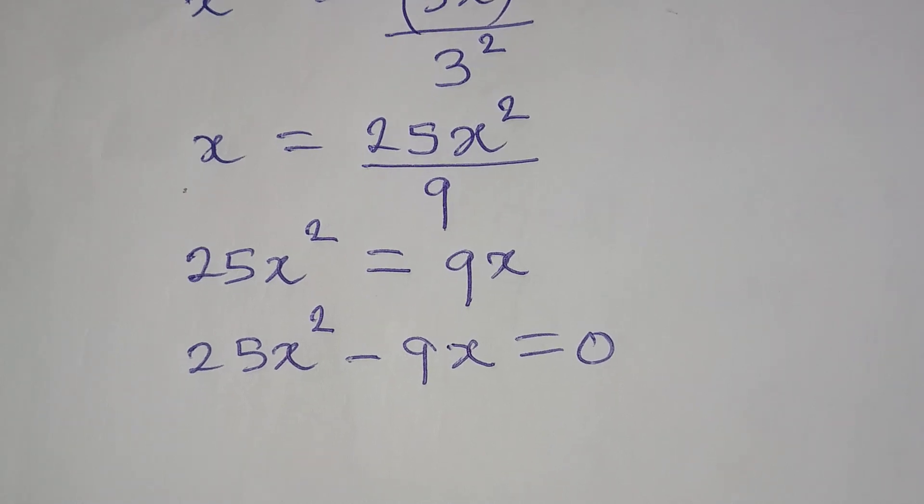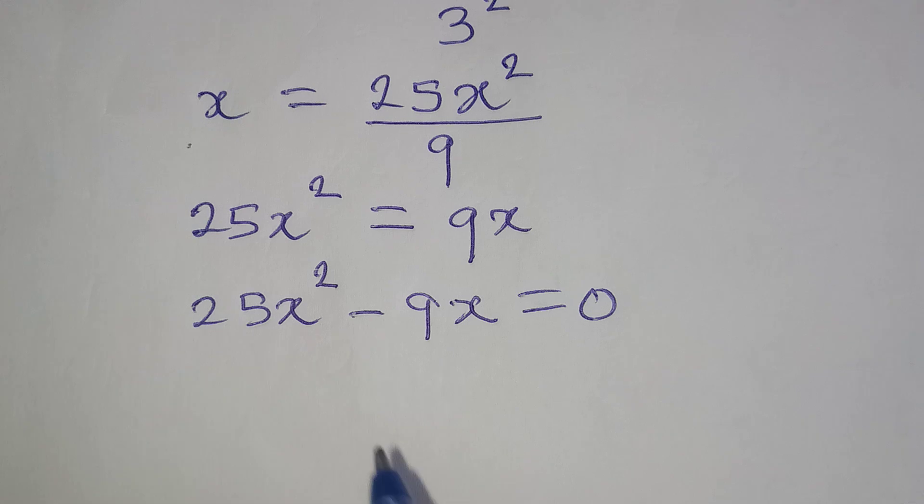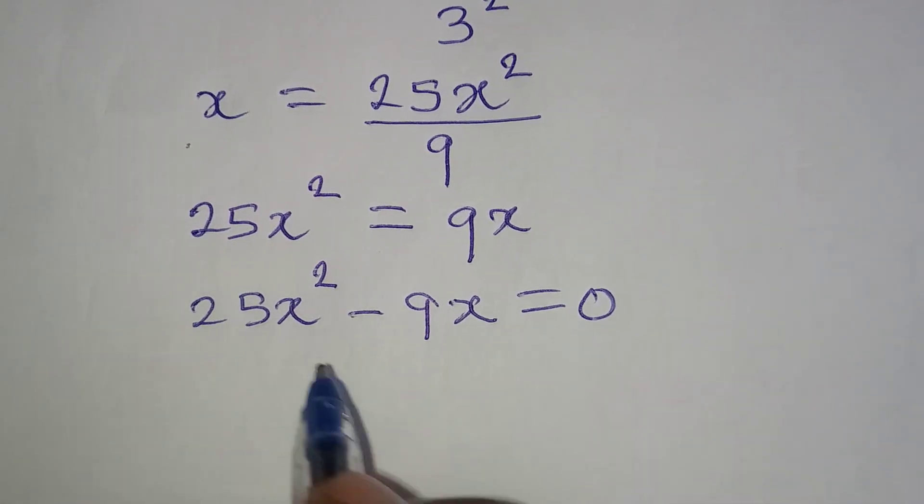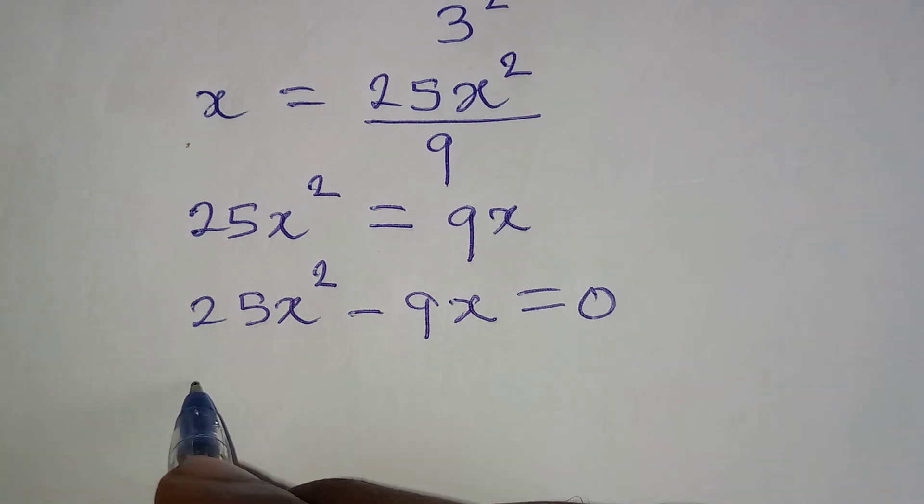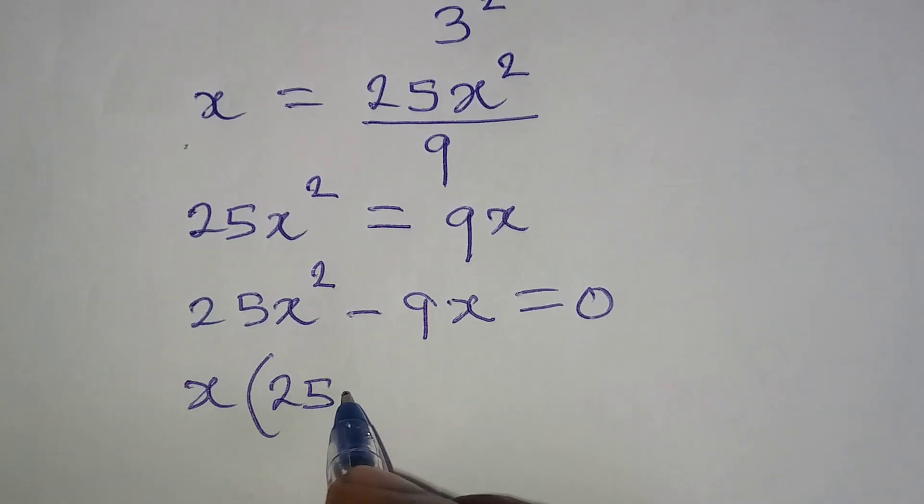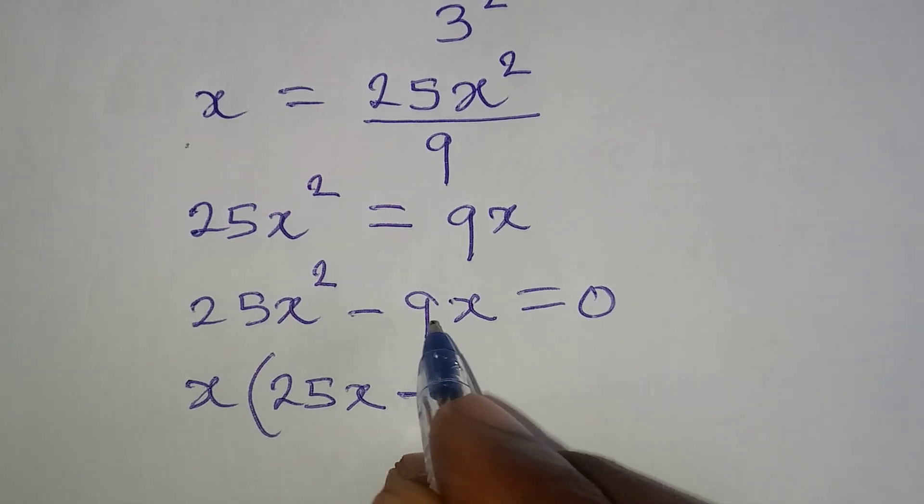So what do we do? We can factor out x because we have x common to both of them. So when I do that, x comes out and in here, I have 25x minus 9.